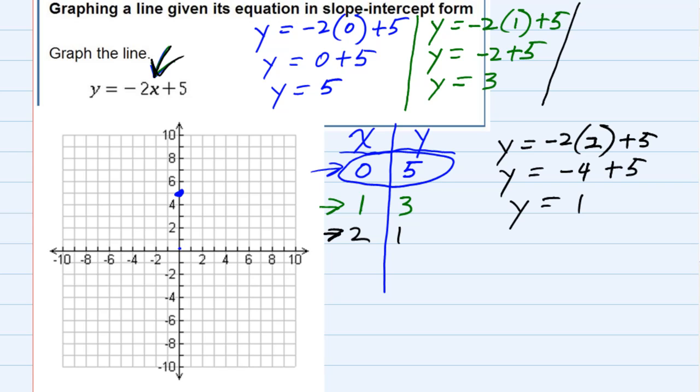And then the second one, 1, 3. If I move over to x equal 1, I now get a y value of 3, which is right here. And then the third one, 2, 1. This time I have an x value of 2, and then go up to the y value of 1.